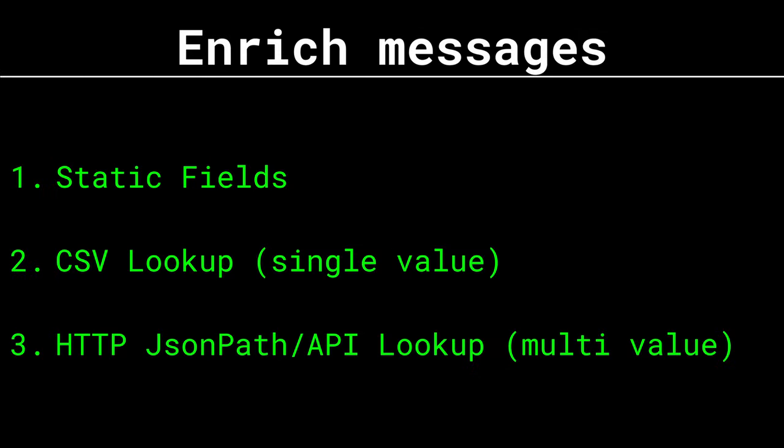I'm going to show you three different ways of doing this. First, static fields, where we insert a key value pair that never changes. Second, a CSV lookup where we place a CSV file on the Graylog server and do a lookup for a key value pair. And finally, an HTTP JSON path, or API call to an external service, where we receive multiple key value pairs and insert one or more into the message.